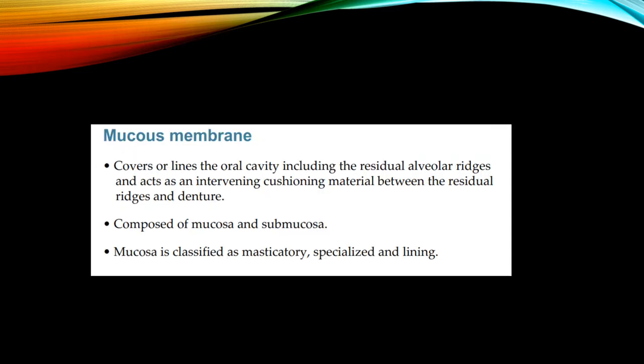The first topic is mucous membrane. It covers or lines the oral cavity including the residual alveolar ridges and acts as an intervening cushioning material between the residual ridges and the denture. It is composed of mucosa and submucosa. Mucosa is classified as masticatory, specialized, and lining mucosa.